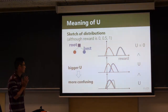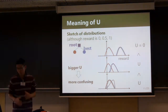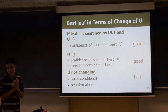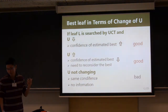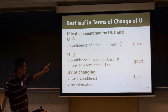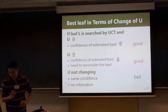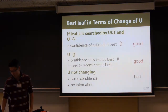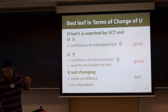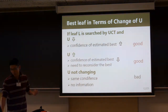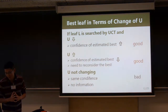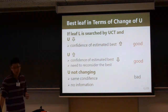Therefore, a larger U-value means a more confusing situation. If leaf L is chosen by UCT and U-value decreases, then confidence in the estimated best move goes up, which is preferable. On the other hand, if U-value increases, the algorithm gets less confidence, but that is also preferable because the algorithm gets more information or learns it should reconsider which the best move is.